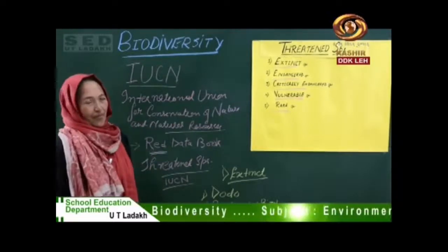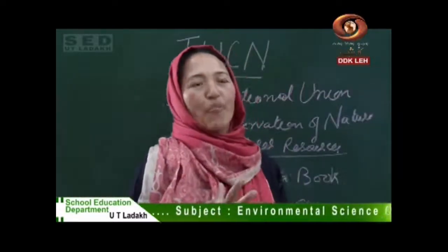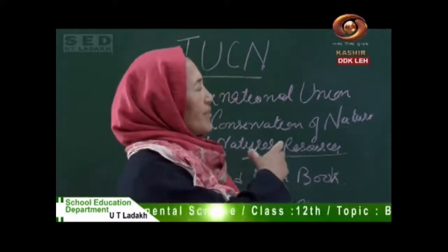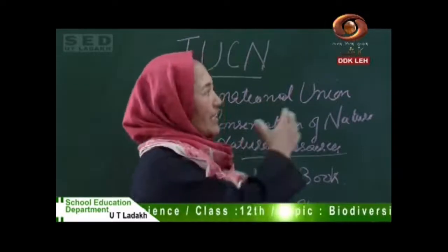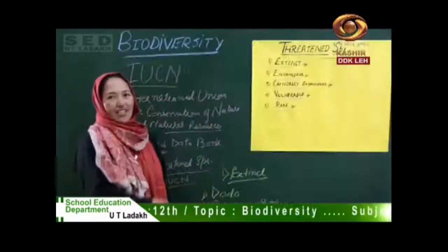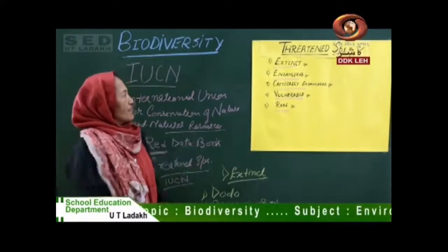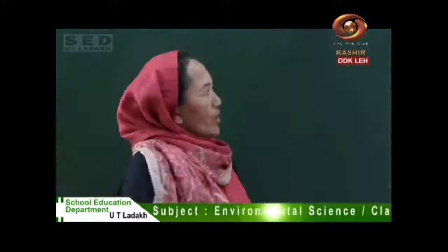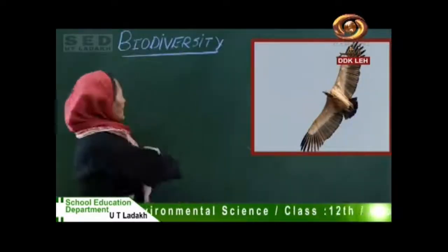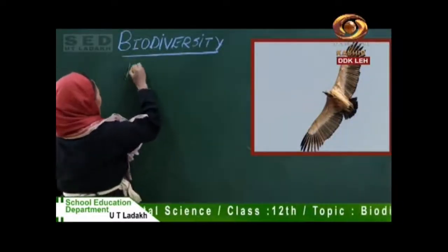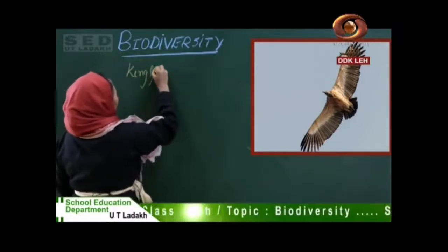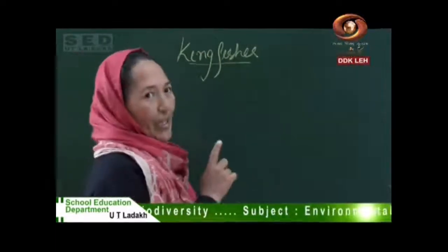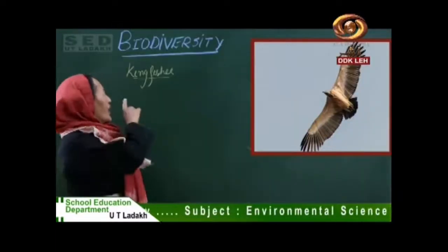Endangered species are those whose numbers have reduced to a critical level. If not preserved or conserved right now, these species may become extinct. For example, the long-billed Indian vulture and the kingfisher are both endangered species.